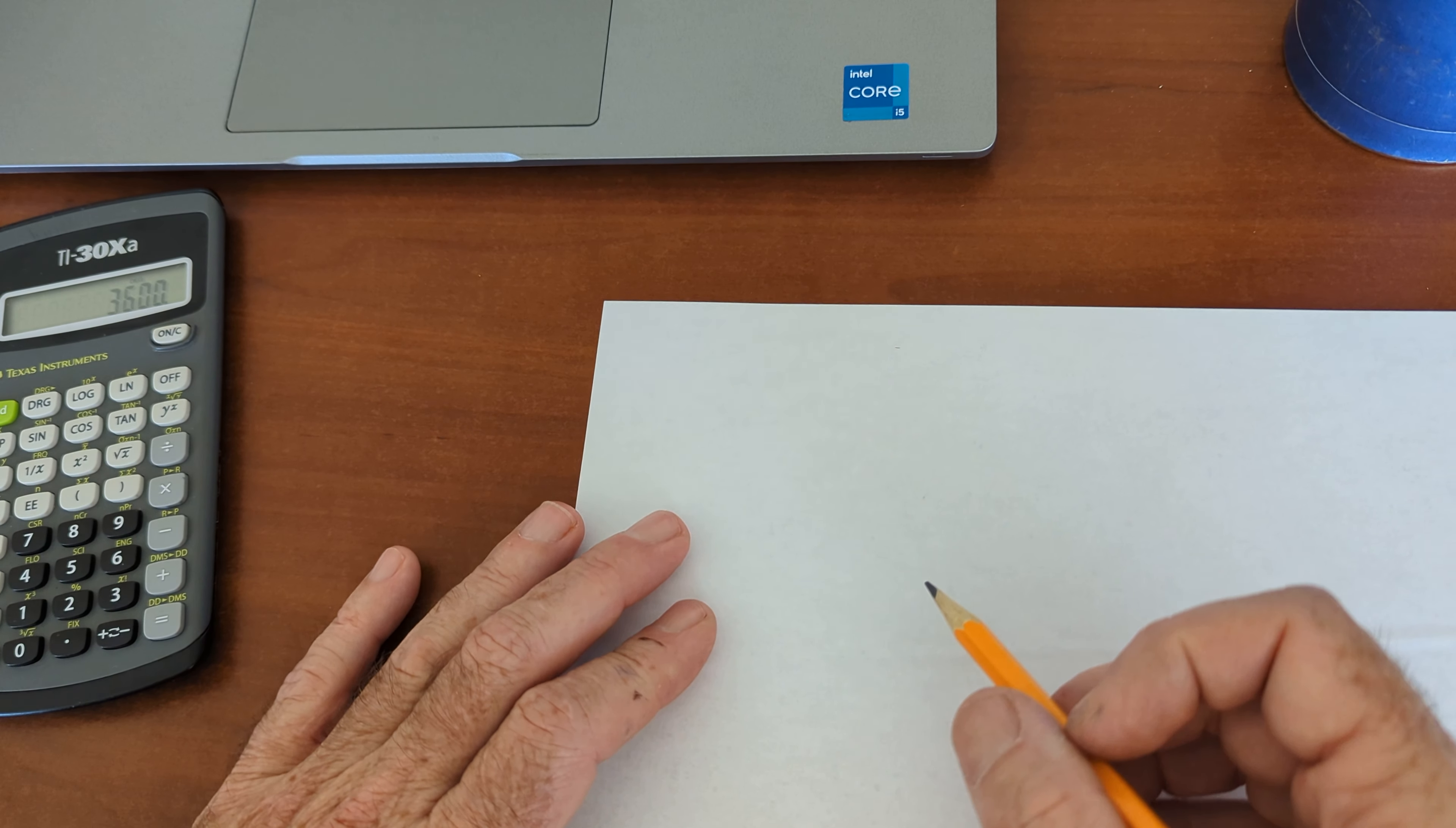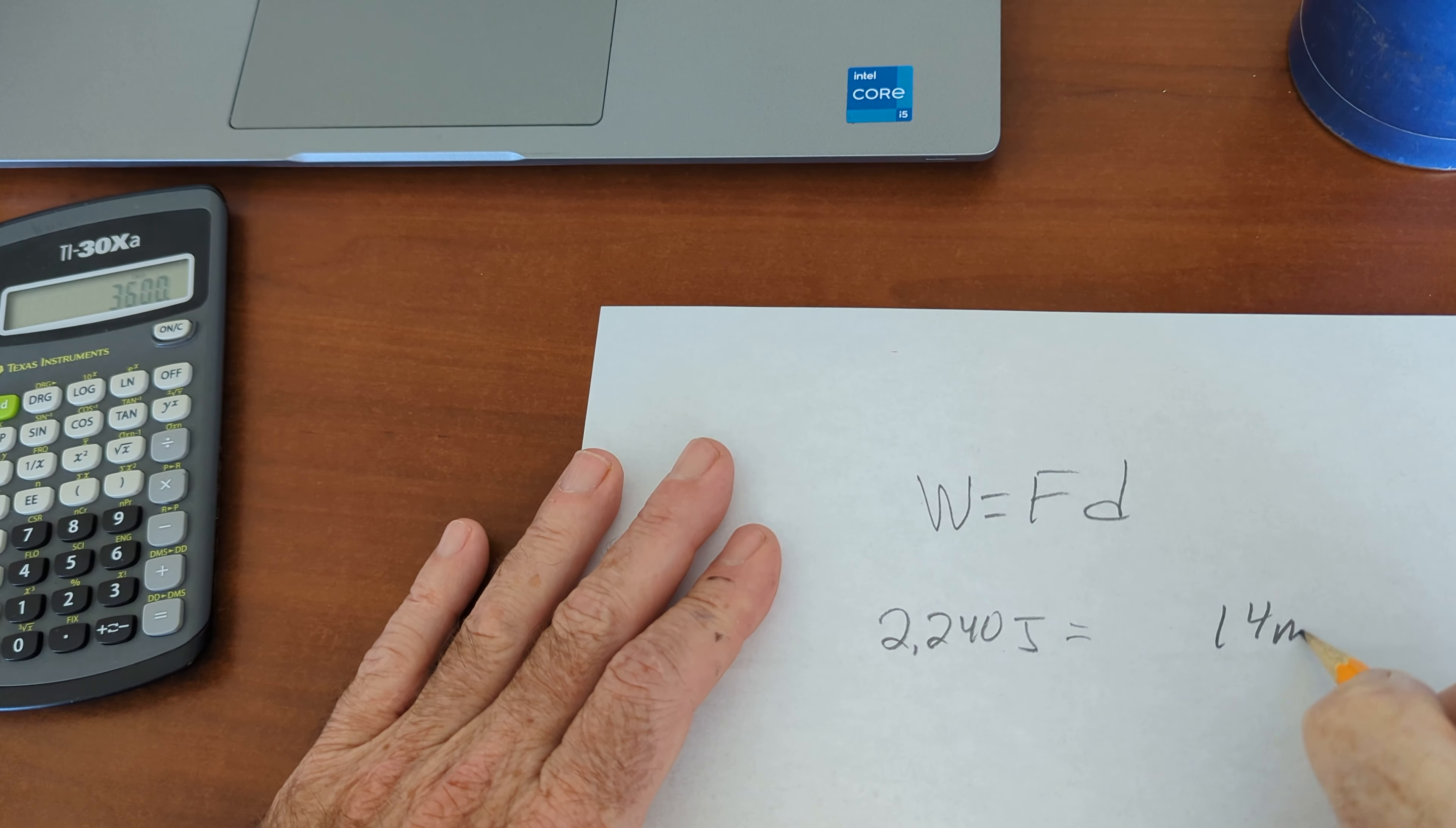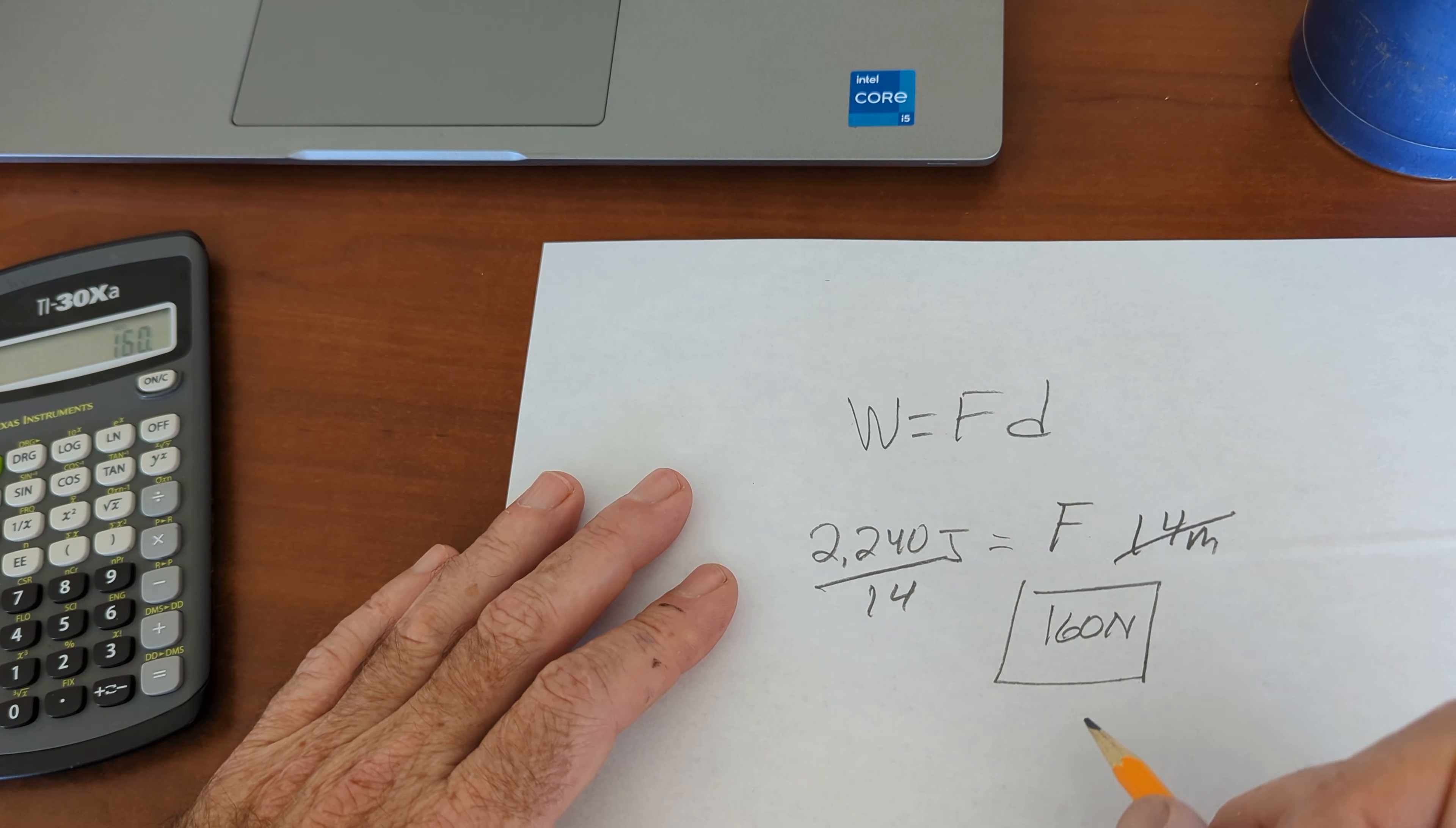A box is lifted 14 meters. How much force? This is a good one. Work equals force times distance. 2,240 joules of work were done on a box that was lifted for 14 meters. How much force was applied? 2,240 divided by 14. That's our first step. 2,240 divided by 14. 160 newtons was the force applied to the box, or how much the box weighed. How much force was exerted on the box?